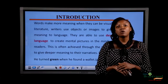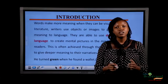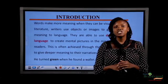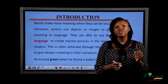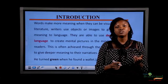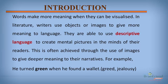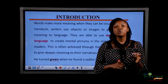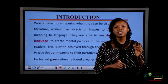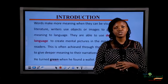Words make more meaning when they are visualized. So writers use words, images, and objects to create a deeper meaning in the mind of readers. For example, 'he turned green when he found a wallet.' Green in this context can mean jealousy or greed. So the writer uses the word green to create a mental picture in the minds of his readers.